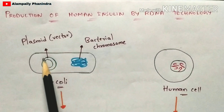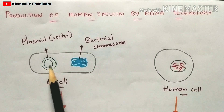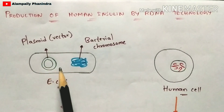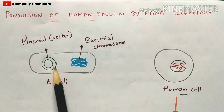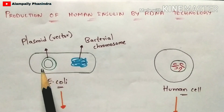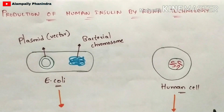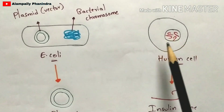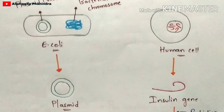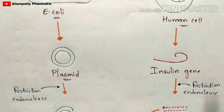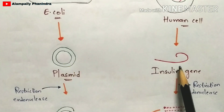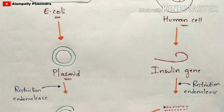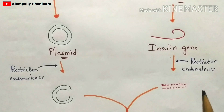What you are going to do is extract the plasmid from the E. coli cell. The plasmid is the genome present in E. coli. In the same way, you are also going to extract the insulin gene from the human cell. So you extract both the plasmid from E. coli and the insulin gene from the human cell.